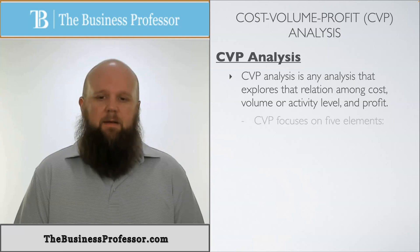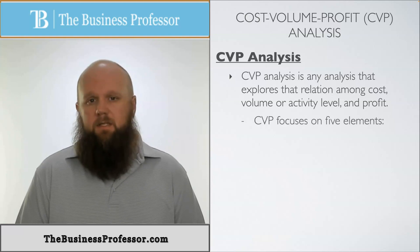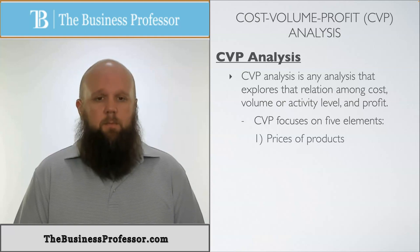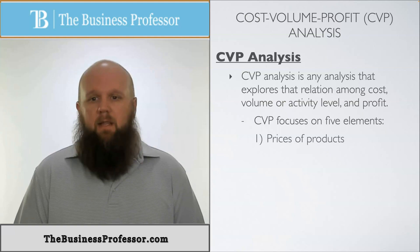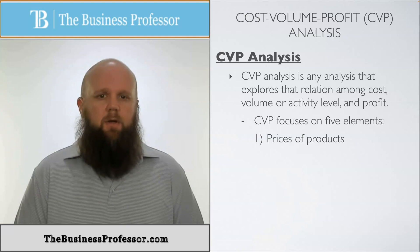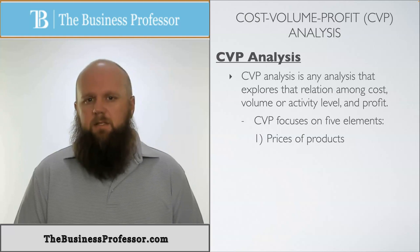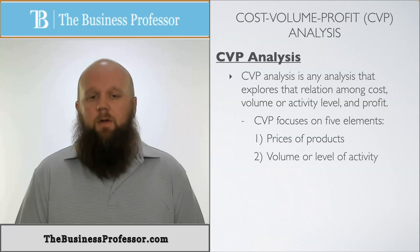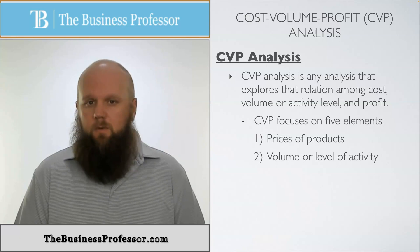There are five factors that you need to focus on when it comes to CVP analysis. The first one is the price of the product, which gives you the sale and other information you'll need within these analyses. The second one is the level of activity, or the volume being sold.